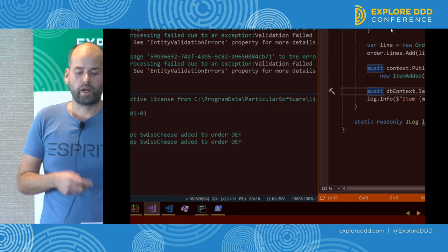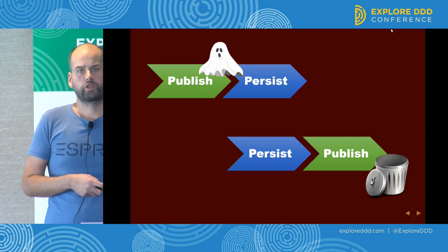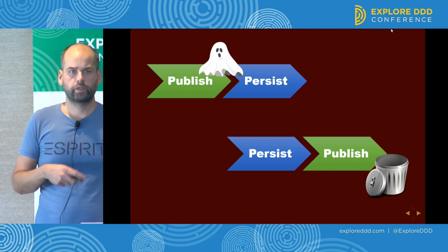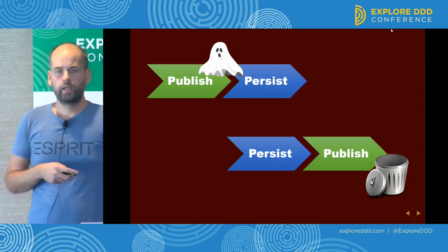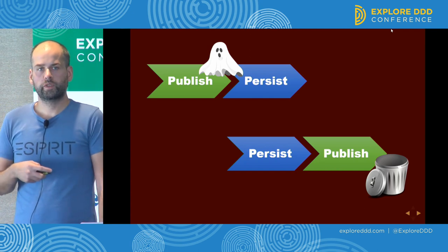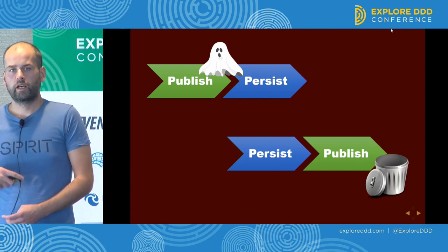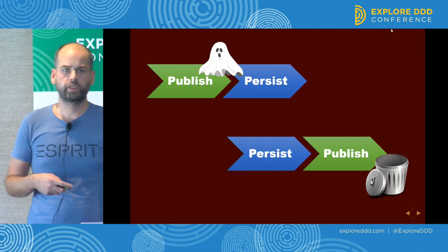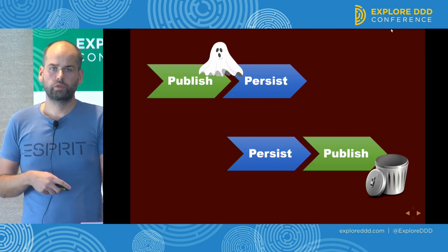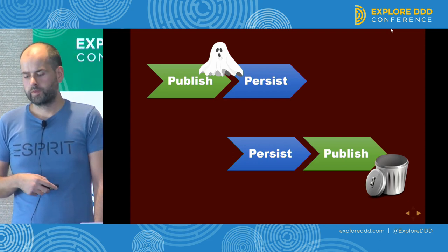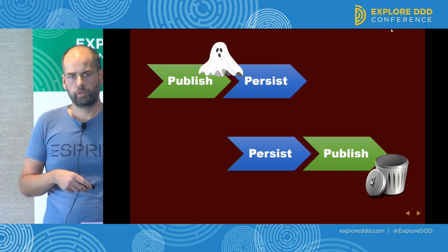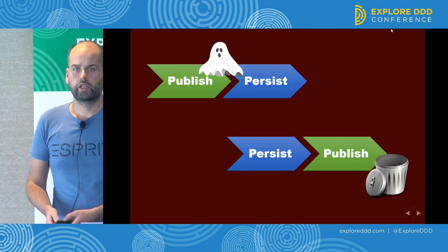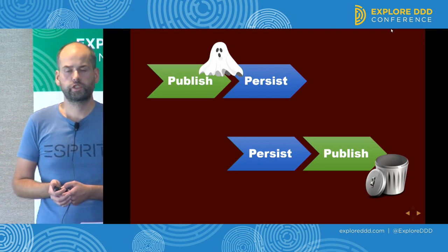The invalid state has been broadcasted — and that's really bad. They got back to the drawing board. If they use publish-then-persist, they risk publishing ghost messages — messages that carry a state that hasn't been persisted and is invalid, so everybody else knows about state that will not happen. And if they reverse the order — persist then publish — they risk not publishing those messages in case of broker failures. Both situations are really bad.